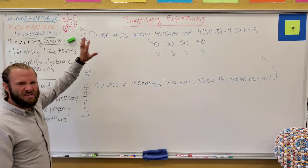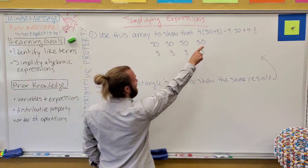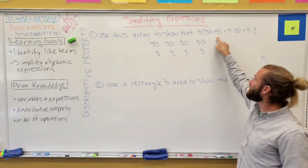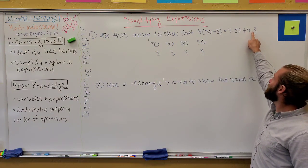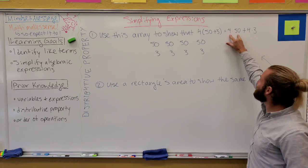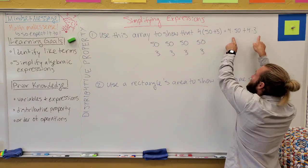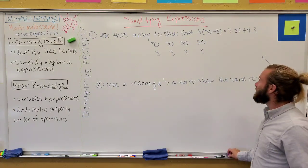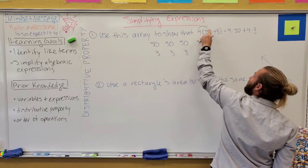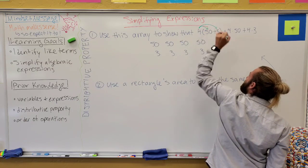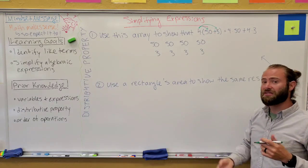I'm going to step through these together, so I'm not going to ask you to pause. Use this array to show that 4 times (50 plus 3) — meaning add 50 and 3 first, then multiply by 4 — is the same as 4 times 50 plus 4 times 3. So we multiply the 4 by the 50 and by the 3 separately, then add. It represents a different order, but either way it's always going to be equal. That 4 multiplies into the 50 and separately into the 3, giving us 4 times 50 and 4 times 3 — that's how to correctly apply the distributive property.